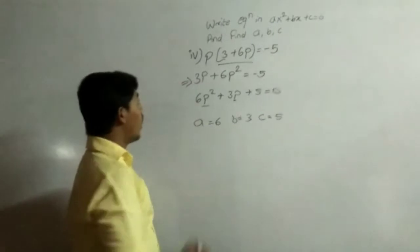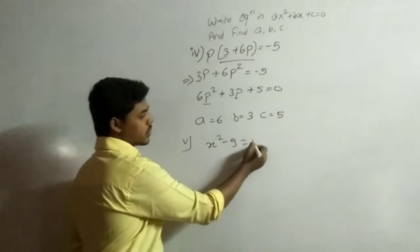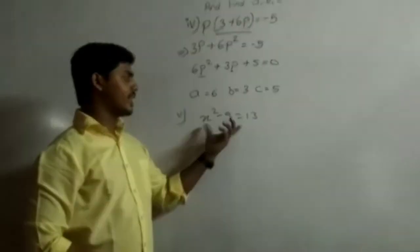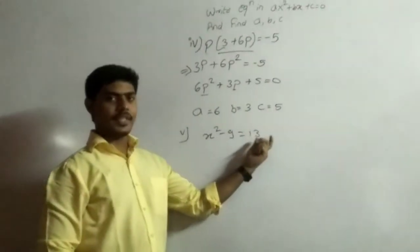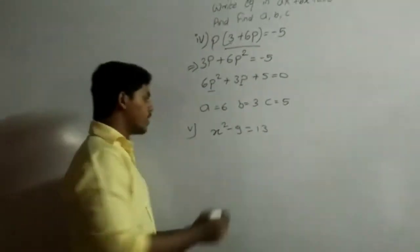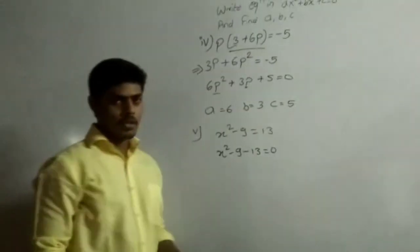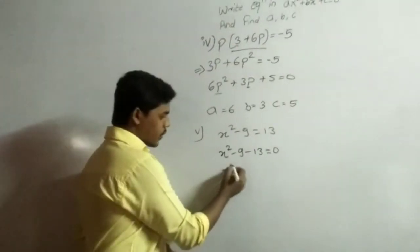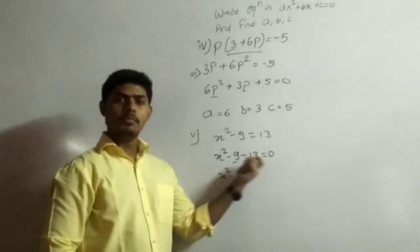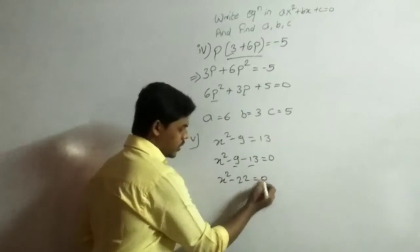Next question, all question given x square minus 9 equals to 13. Then here you can see constant number convert, then plus minus, that means x square minus 9 minus 13 equals to 0. Then x square minus minus here plus and sin minus then 13 plus 9, then answer you can see 22 equals to 0.